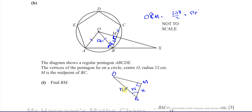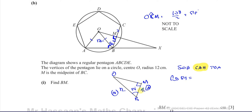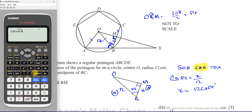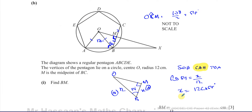We have a right angle triangle. We know the side adjacent to the given angle, and we know the hypotenuse. So we use cosine: cosine of 54 equals adjacent over hypotenuse, so cosine(54) = BM / 12. Therefore BM = 12 × cos(54°). Making sure we're in degree mode, that gives us 7.0534, so BM ≈ 7.05 centimeters to 3 significant figures.